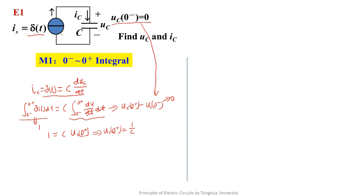This exercise is very special. Only when t changes from zero-minus to zero-plus does the current source have an infinite value. When t is greater than zero-plus, the current source becomes an open circuit. In other words, uc(0+) keeps constant after t is greater than zero-plus. So its waveform is like this: when t is less than zero the value is zero, and at t equals zero the value suddenly changes to 1/C. Obviously, we've known Ic equals delta(t), so its waveform is like this.